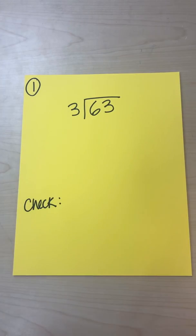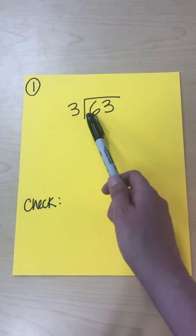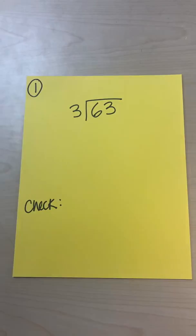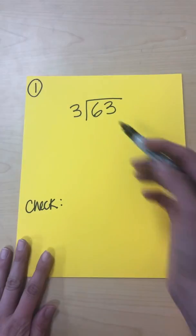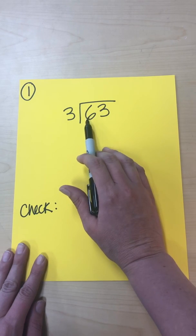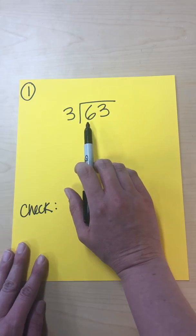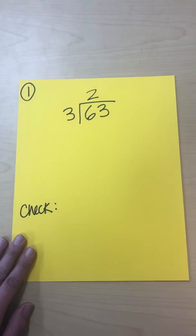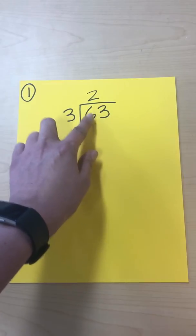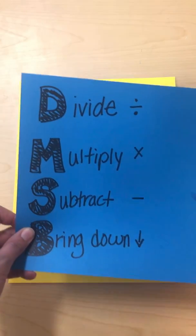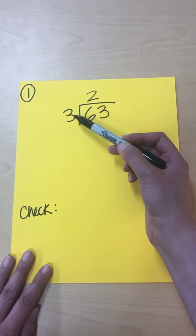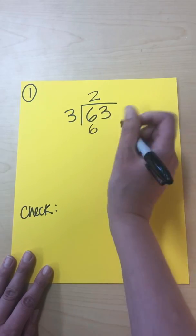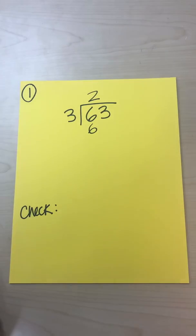We have our two-digit dividend on the inside, the divisor on the outside, and we're trying to find the quotient. Step one is divide: we divide the three into our very first number, which is six. How many times does three go into six? Two times — so we write 2 right above the six. Step two is multiply: three times two is six, so we write six underneath.